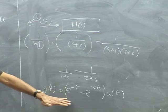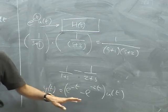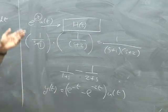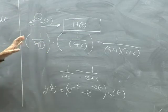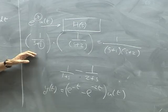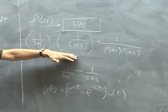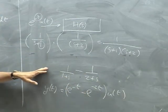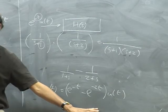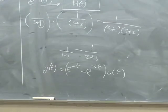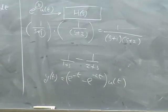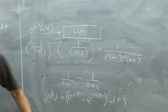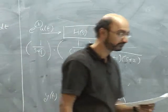What we see is two exponentials that are decaying — one slow and one fast — and the difference between them is what the system produces. You can verify this gives the same answer as using the Fourier transform. Solving a system using Laplace is very straightforward: compute the transform of the input, multiply by the transfer function, expand partial fractions, take the inverse.